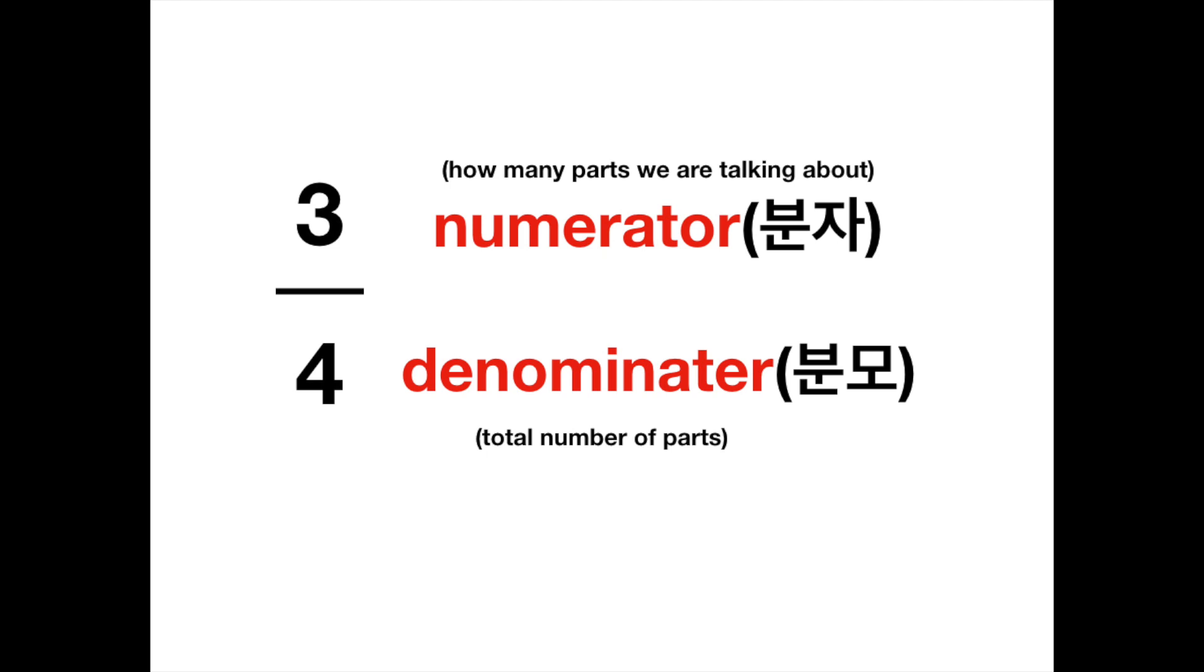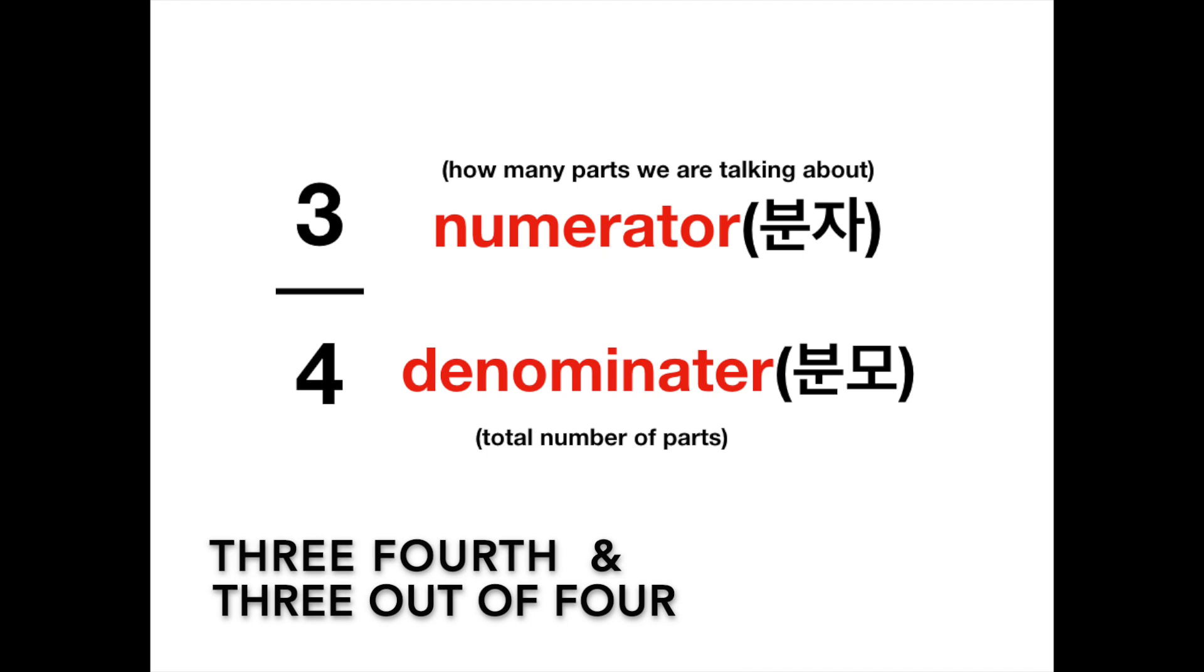So, when you see this fraction, the numerator is 3 and denominator is 4. So, the numerator 3 is just 3. And for the denominator 4, we put th after 4. Fourth. So, it's 3 fourths. Or, we can just call it 3 out of 4. Because the numerator 3 is the part that we're talking about. And the denominator 4 is the total number of parts. So, we have two ways to call this fraction. 3 fourths and 3 out of 4.